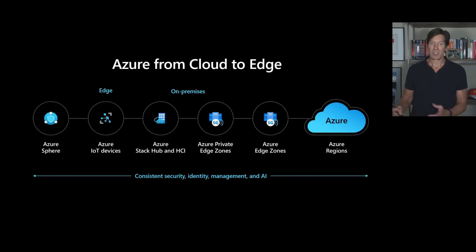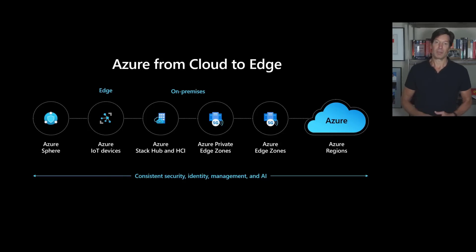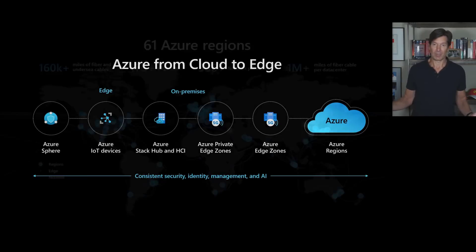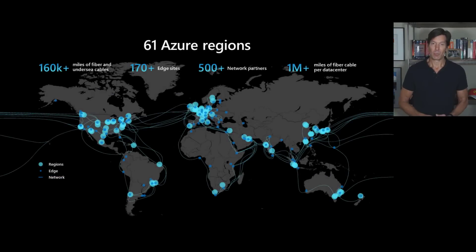Azure Private Edge Zones and Azure Edge Zones are intermediate class deployments of Azure services that I'll talk more about later. This full spectrum is Azure Datacenters. When you start to talk about the far right end of that spectrum — the hyperscale public cloud regions — you start to talk about our overall cloud footprint. Azure has more regions than any other cloud provider, with more than 60 at this point, and we've launched multiple since just the start of this year.